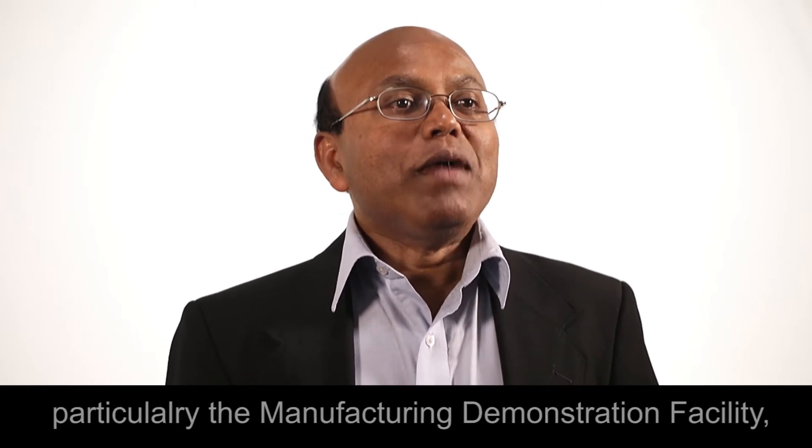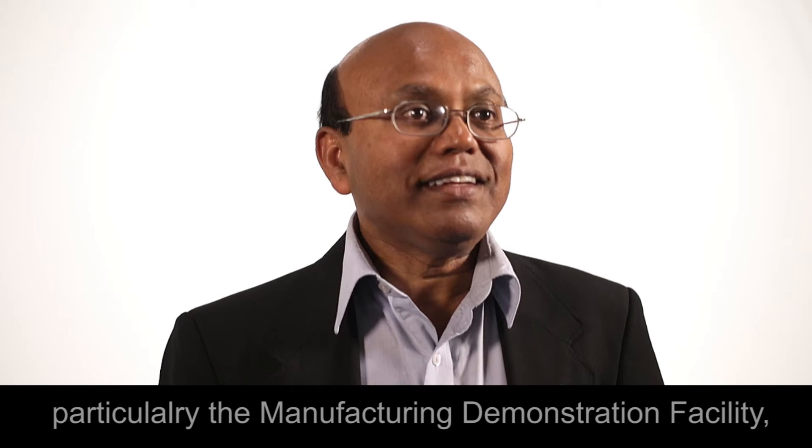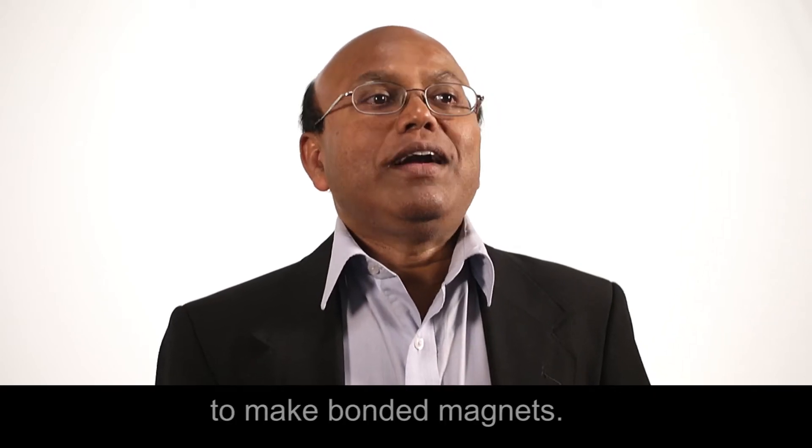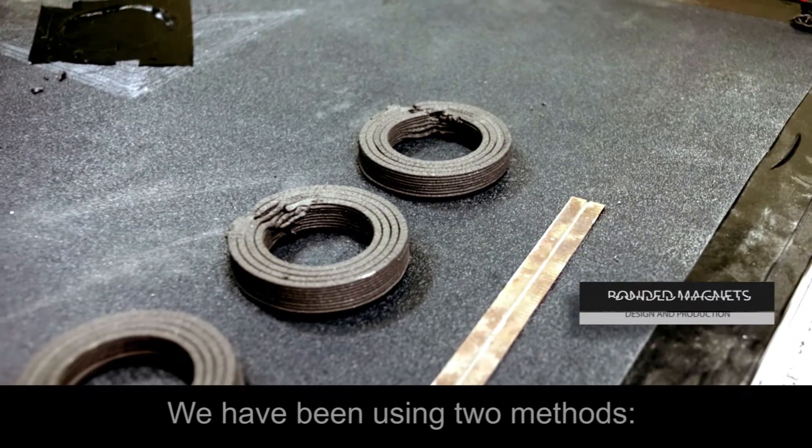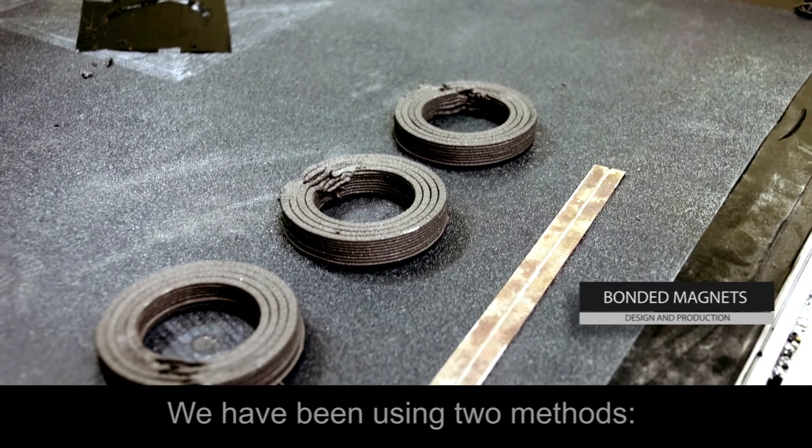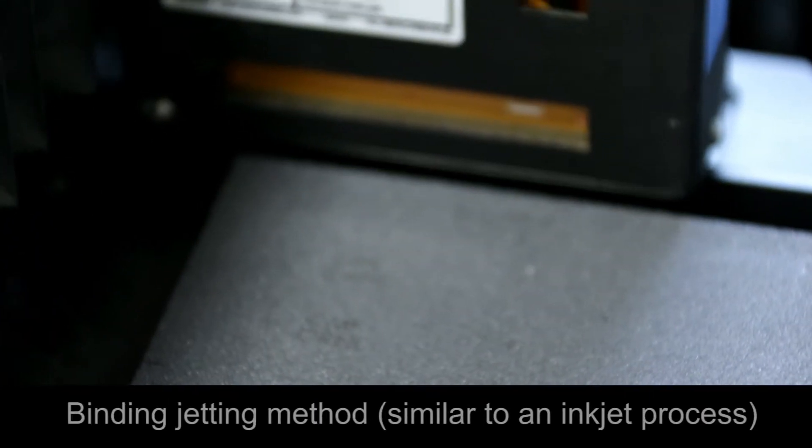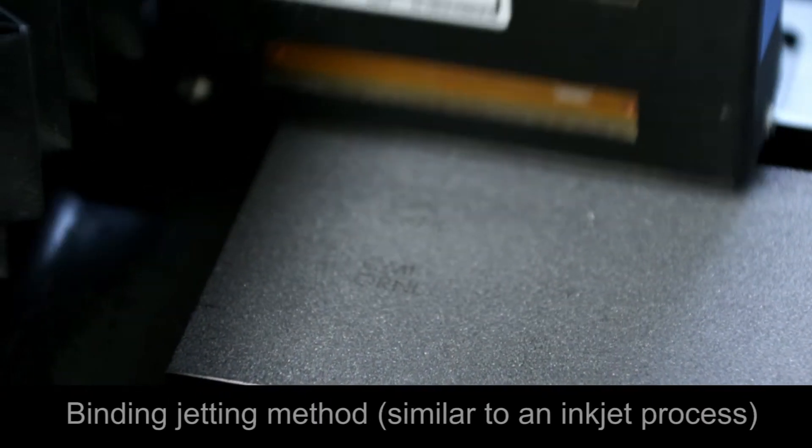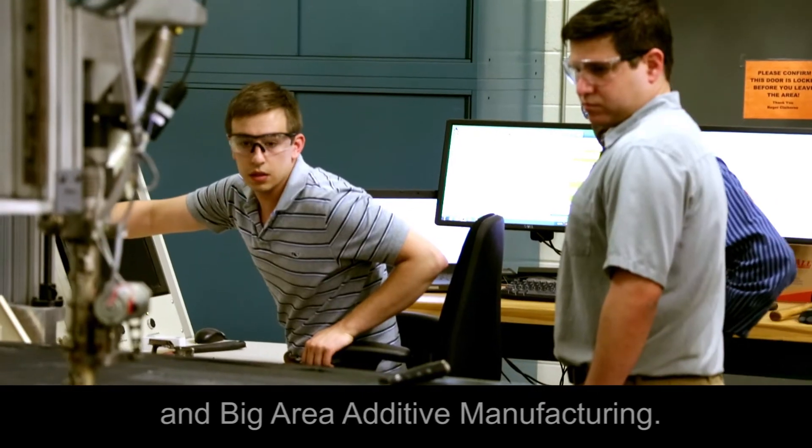We use the facilities available at Oak Ridge, particularly the manufacturing demonstration facility, to make bonded magnets. We have been using two methods: binder jetting, which is similar to an inkjet process, and big area additive manufacturing.